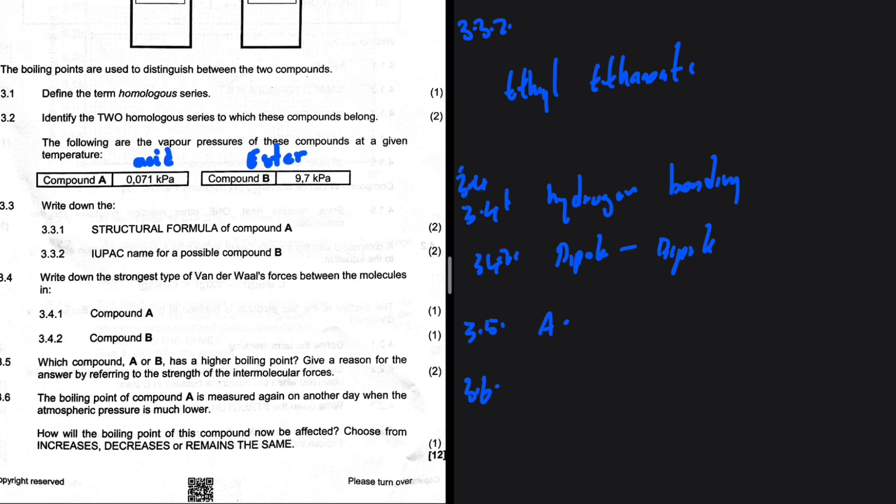3.6 The boiling point of compound A is measured again on another day when the atmospheric pressure is much lower. How will the boiling point of this compound now be affected? Choose from: increases, decreases, or remains the same. Let me know in the comments what's your answer to 3.6 - the boiling point of compound A on a different day with lower atmospheric pressure. Does it increase, decrease, or remain the same? Let me know in the comments which video you want us to do next.